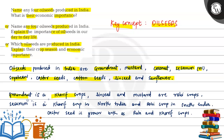Groundnut is a kharif crop, while linseed and mustard are rabi crops. In the north, these oil seeds are kharif crops, but in the south they are rabi crops.